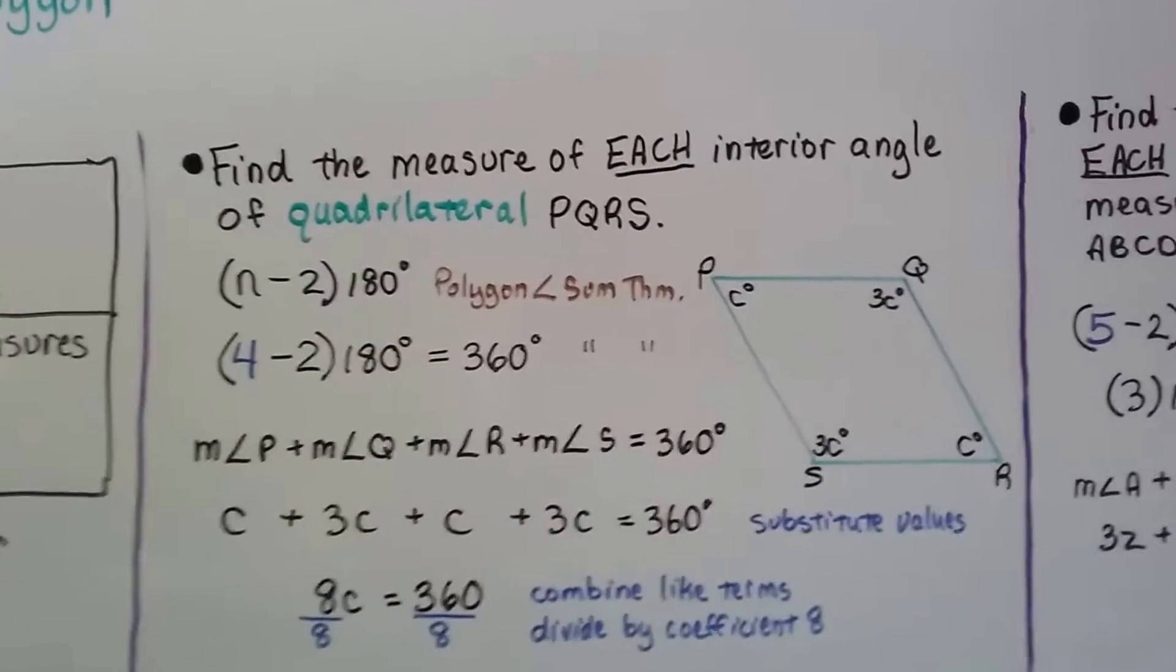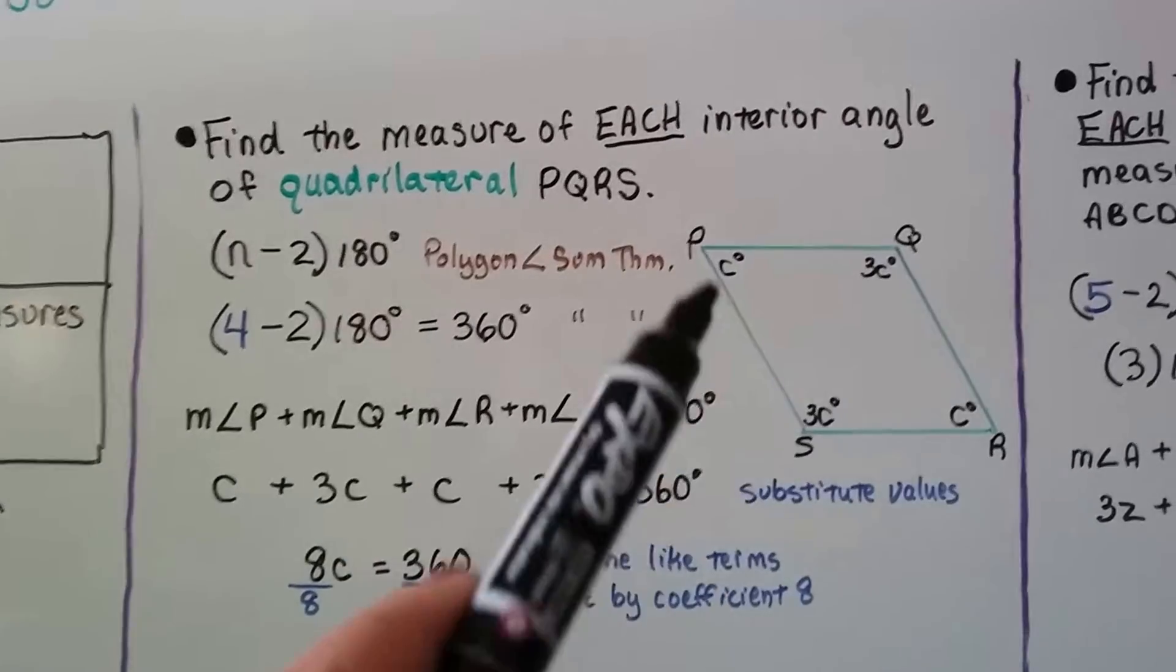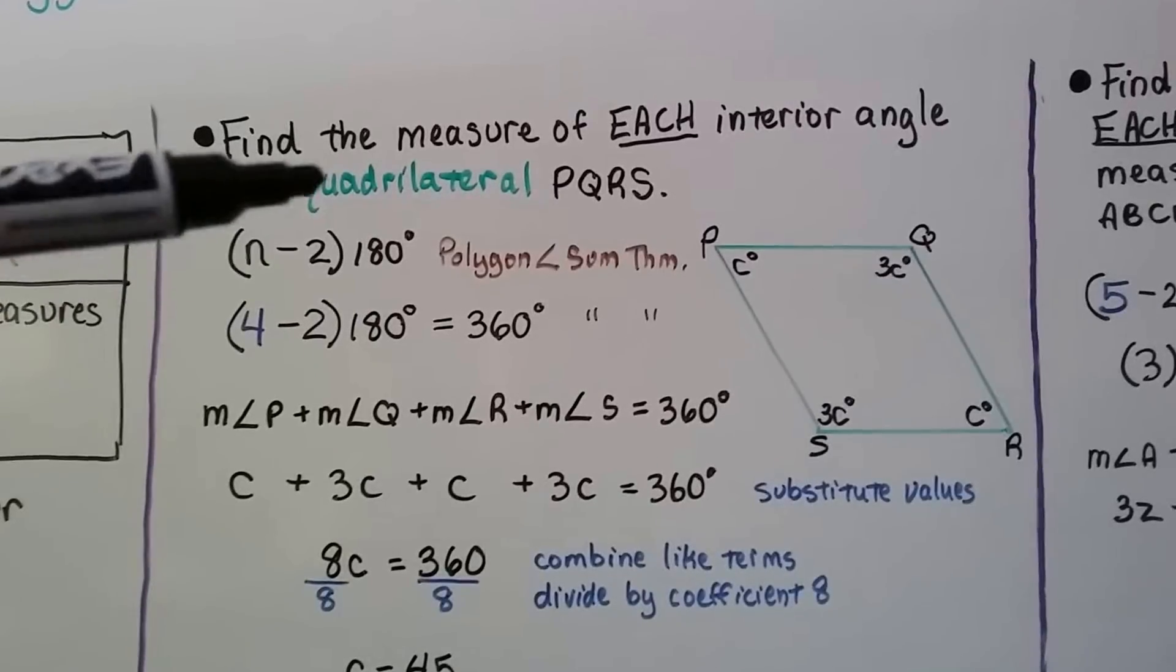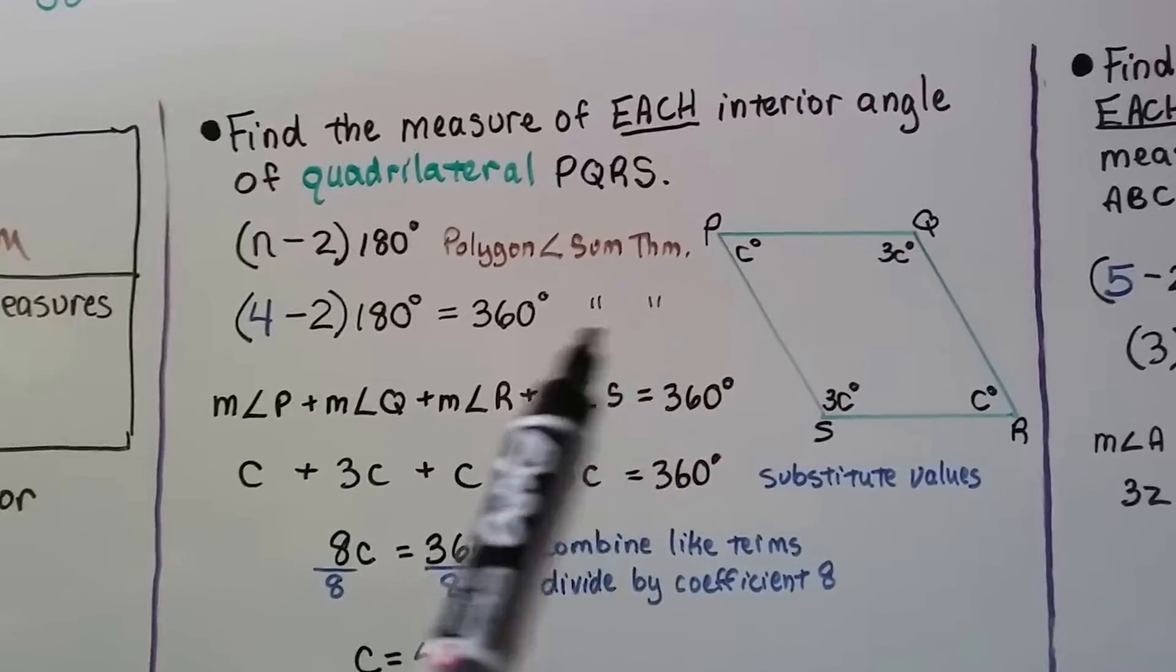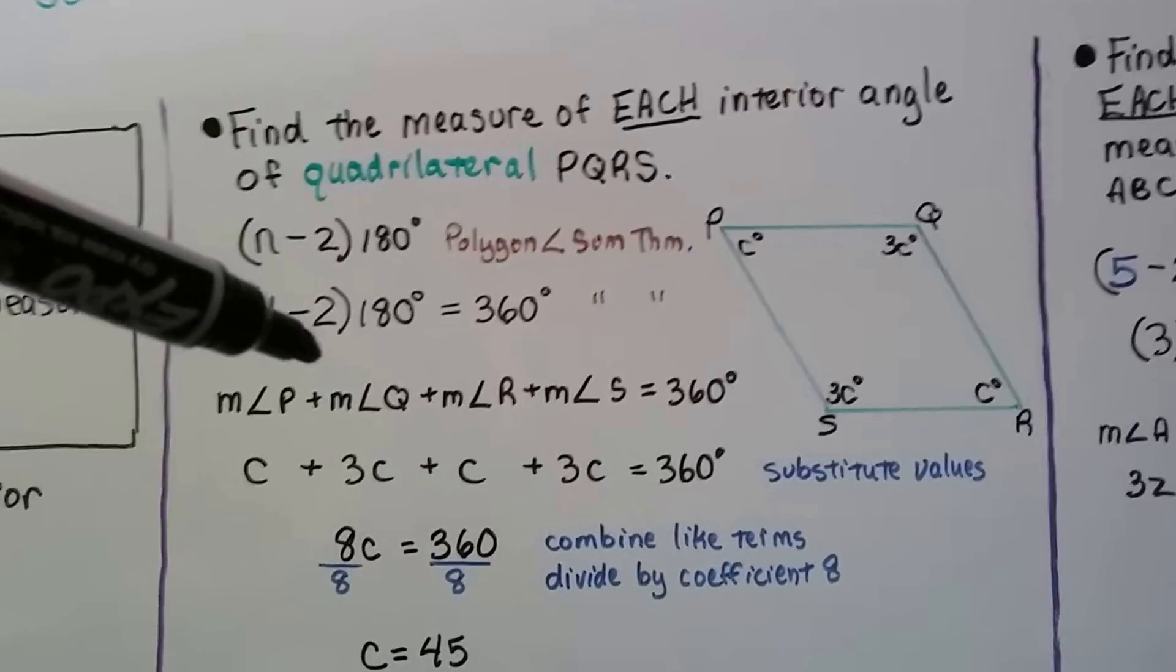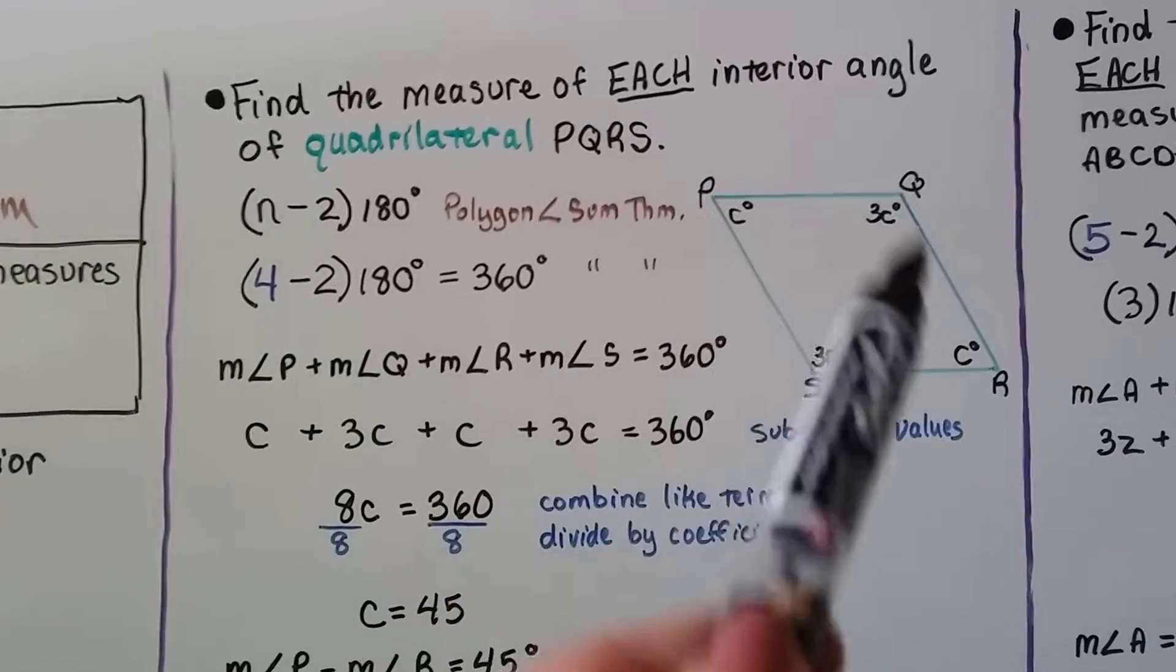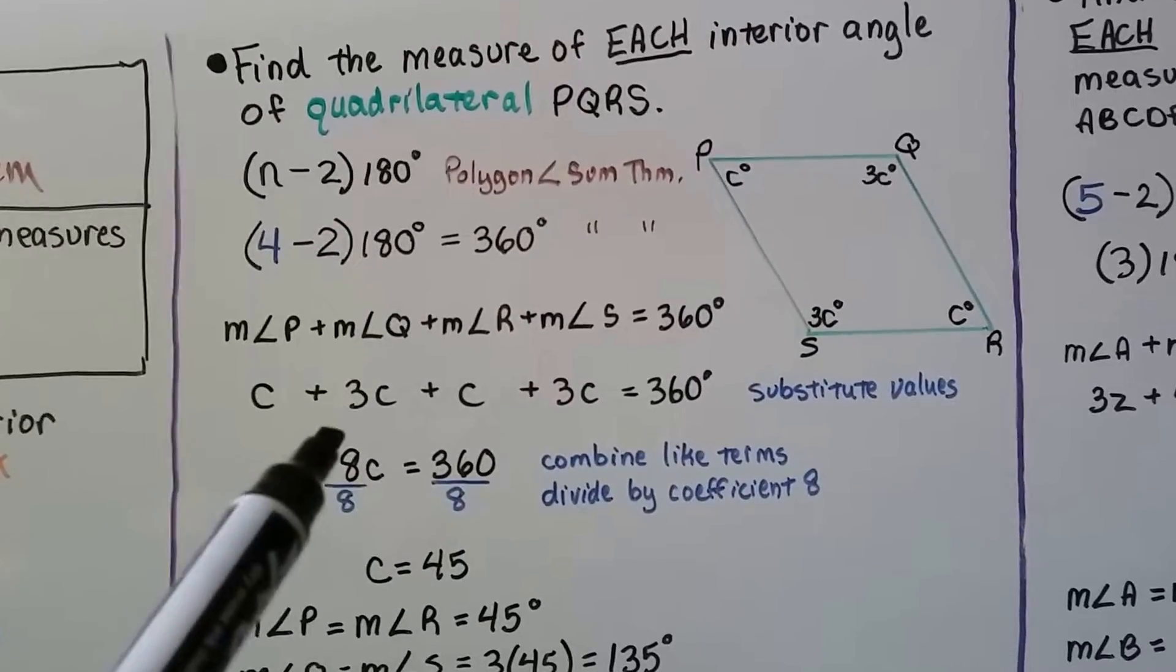We can find the measure of each interior angle of quadrilateral PQRS. We can see PQRS, this is C degrees, this is 3C, that's C and that's 3C. We use our polygon angle sum theorem. It's a quadrilateral with four sides, we do 4 minus 2 times 180. The measure of angle P plus angle Q plus angle R plus angle S equals 360 degrees. We substitute these variables: C plus 3C plus C plus 3C, combine like terms and get 8C.